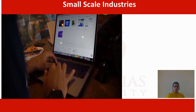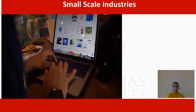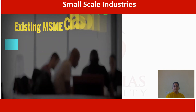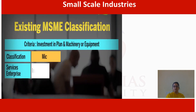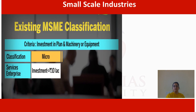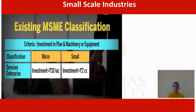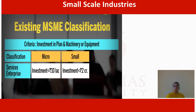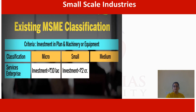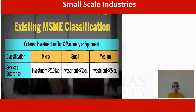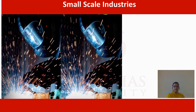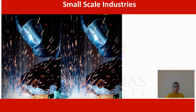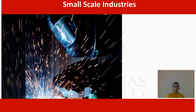Now we discuss the distribution of MSMEs in the service sector. Under the existing MSME classification for the service sector: for micro enterprise, the investment is within 10 lakhs; for small enterprise, the investment is within 2 crore; and for medium enterprise, the investment is under 5 crore. The revised MSME classification has increased the investment size to bring more companies under this definition.